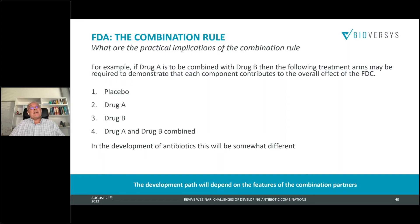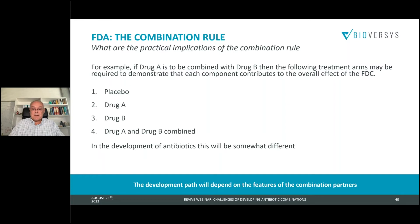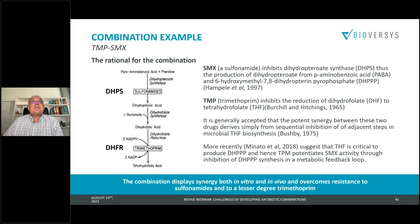If it's a new agent as drug B, you're really looking at two clinical trials: drug B alone versus drug A and drug B. They do offer a superiority study as an out, albeit with a somewhat higher p-value threshold potentially above 0.05. The development path will really depend on the features of the combination partners, and this has significantly affected the development of new fixed-dose combination antibiotics.